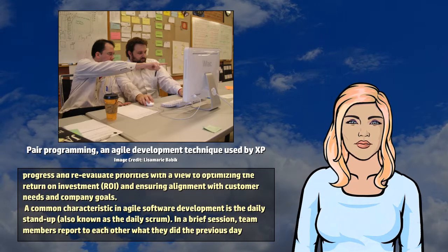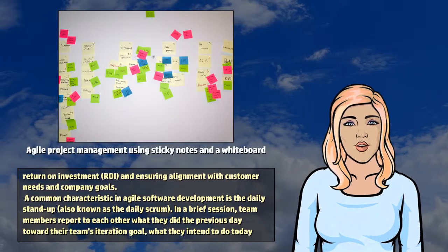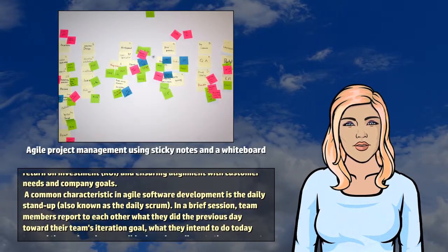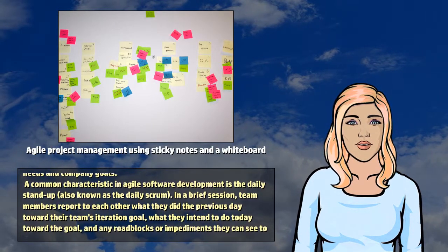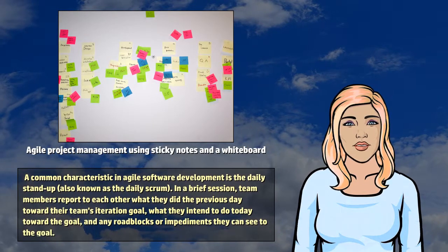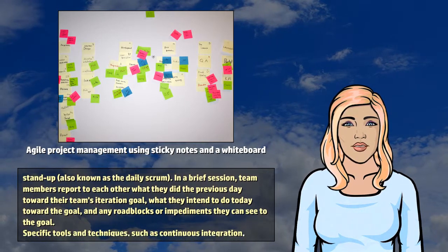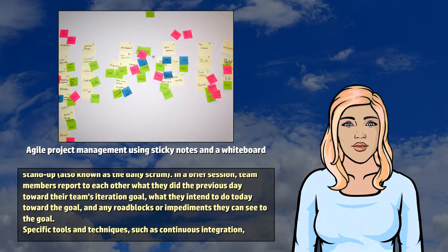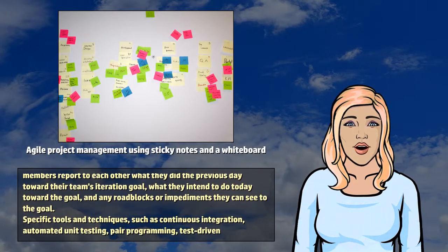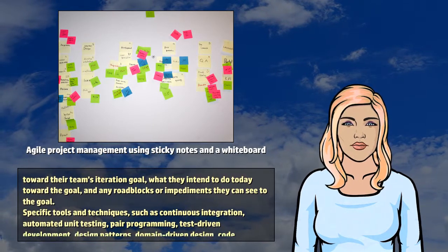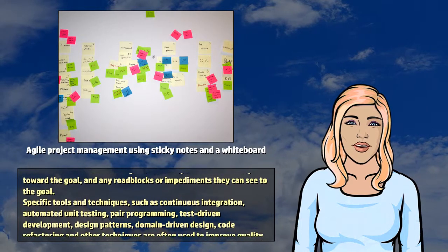A common characteristic in Agile software development is the daily stand-up, also known as the daily scrum. In a brief session, team members report to each other what they did the previous day toward their team's iteration goal, what they intend to do today toward the goal, and any roadblocks or impediments they can see to the goal.